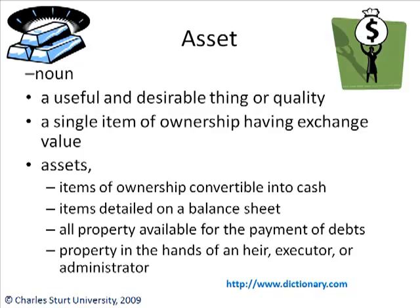One of my favorite websites is dictionary.com. What's an asset according to dictionary.com? As a noun, it's a useful and desirable thing or quality. It's a single item of ownership having exchange value. And assets? Items of ownership convertible into cash, items detailed on a balance sheet, all property available for the payment of debts, property in the hands of an heir, executor or administrator.